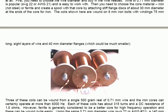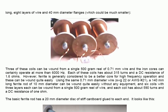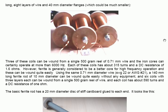Then, you need to choose the core material. Iron, definitely not steel because it becomes a permanent magnet. Or, ferrite, can be used as a core to create a spool by attaching stiff flange discs, in this case of about 30 mm diameter, at the ends of the core for iron. The coils shown here are wound on 8 mm iron bolts, with a winding length of 75 mm long. Eight layers of wire and 40 mm diameter flanges, which could be a lot smaller, make up the setup for this type of coil. Three of these coils can be wound from a single 500 gram reel of 0.71 mm wire. And, the iron cores can certainly operate at more than 6000 cycles a second. Each of these coils has about 315 turns, and has a DC resistance of 1.6 ohms.